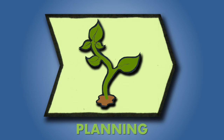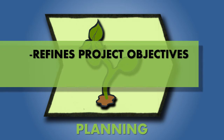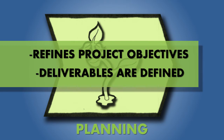The planning process group refines and defines the project objectives and then plans the steps necessary to achieve those objectives within the project scope. This is when budgets are estimated, timelines are set, and the deliverable is defined.